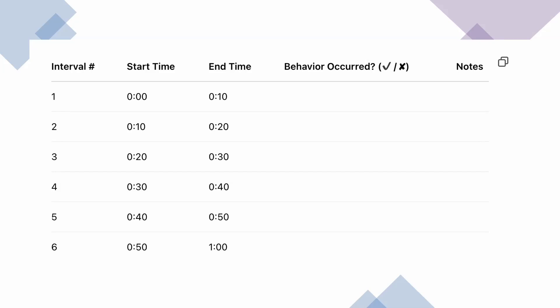You can do 30 seconds, 20 seconds, a minute, or five minutes — it just really depends. The smaller the intervals, the better the picture of behavior. The bigger they are, the easier it is to do and the less data you're collecting. You look at each interval and mark whether behavior occurred or not. There are rules for partial, whole, and momentary time sampling, and we'll talk about each one individually.